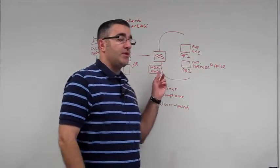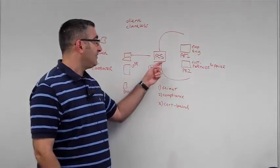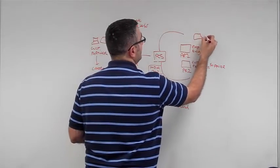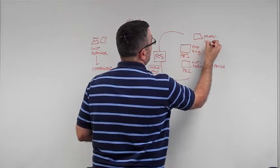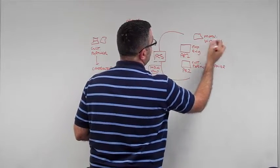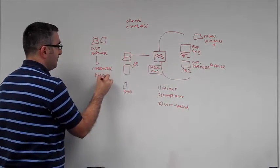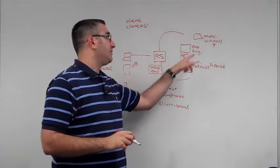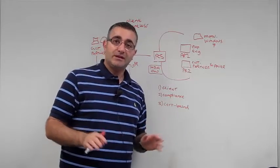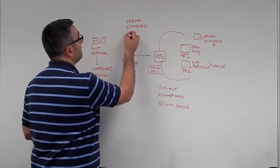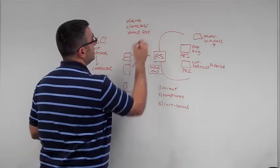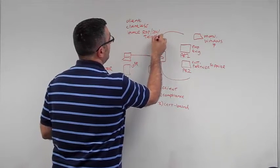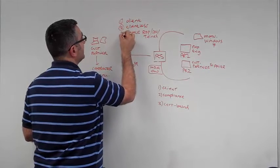We also do RDP brokering using HTML5 from the clientless connection. So if there are other machines, like some manufacturing machine here, a Windows 7 box, somebody who's out here doing manufacturing support needs to connect, we can actually have them connect to the browser and from the browser RDP here from any machine without needing any plugins or anything. So we have HTML5 RDP brokers. We can also do SSH, we can also do Telnet all over the browser. These are some of the options for connecting.